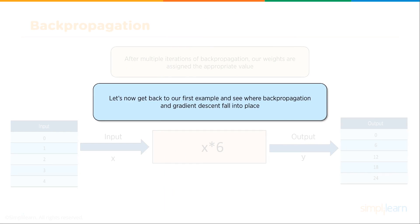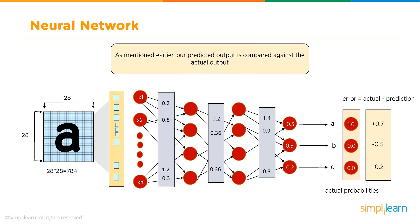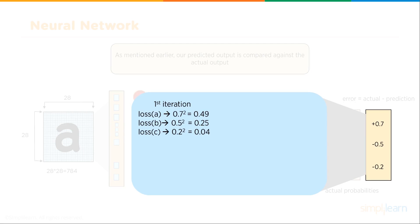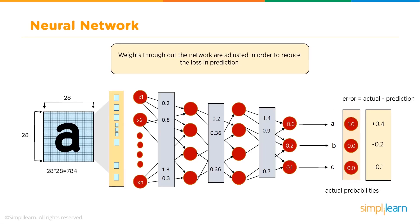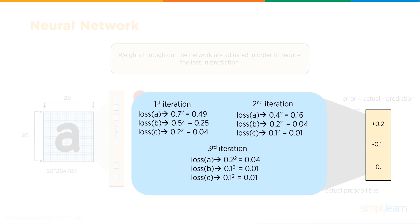Let's now get back to our first example and see where the backpropagation and gradient descent fall into place. We're not looking at a single node anymore. Now we have 28 by 28 grid or 784 inputs coming into the first level which has 784 nodes. Depending on how you build your neural network, the next layer might also have 784 nodes, or it might continually shrink depending on what you need. As mentioned earlier, our predicted output is compared against the actual output. And we go ahead and compute our loss. The loss of A is 0.7 squared equals 0.49. Loss of B is 0.5 squared or 0.25 and so on. So now we have our first iteration. Weights throughout the network are adjusted in order to reduce the loss in prediction. We do that by doing a second iteration coming through with our different losses. Weights throughout the network are adjusted again. And we do a third iteration.